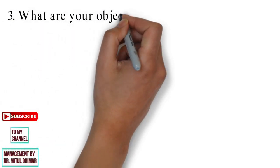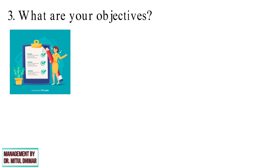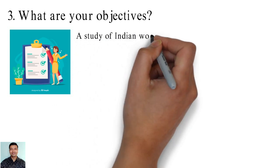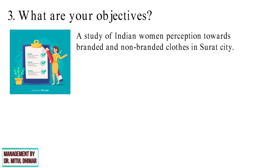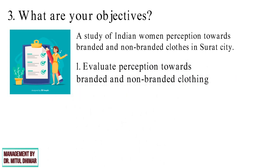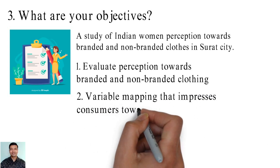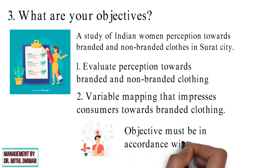Question number 3: What are your objectives? Again objective varies according to your research title. For example, your research title is a study of Indian women perception towards branded and non-branded clothes in Surat city. Here your objective can be evaluate perception toward branded and non-branded clothing and variables mapping that impresses consumer toward branded clothing. So in short you need to keep objectives of your research in your mind and your objective must be in accordance with your title.